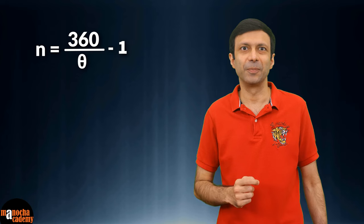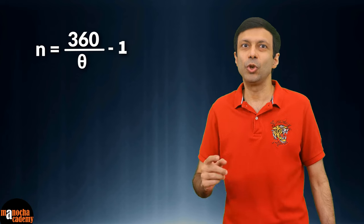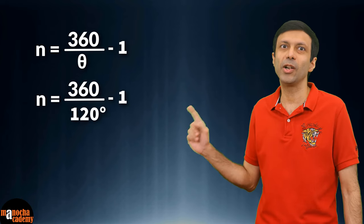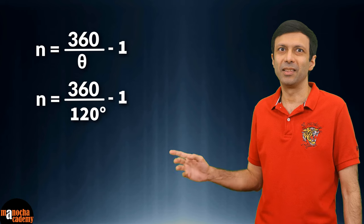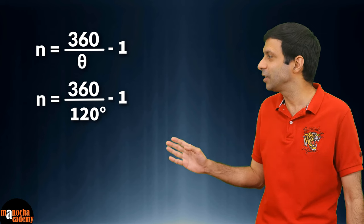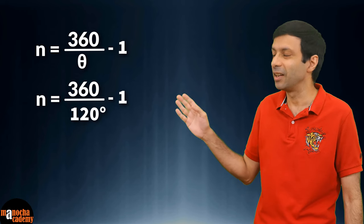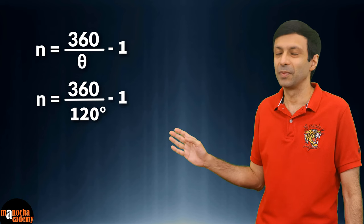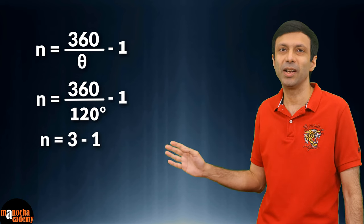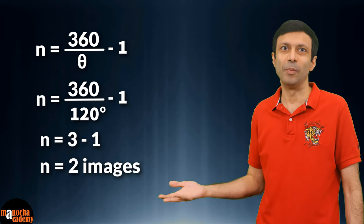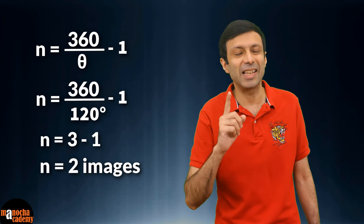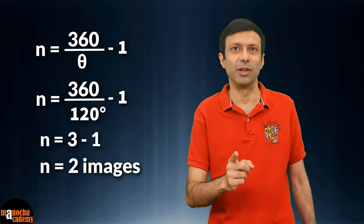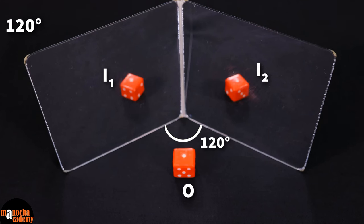Let's test our formula for the case when the two mirrors are at an angle of 120 degrees. Substituting theta equal to 120 in the formula: n = 360 ÷ 120 − 1 = 3 − 1 = 2 images. And this is exactly what we observed — two images are formed when the mirrors are at 120 degrees, just as the formula predicted.